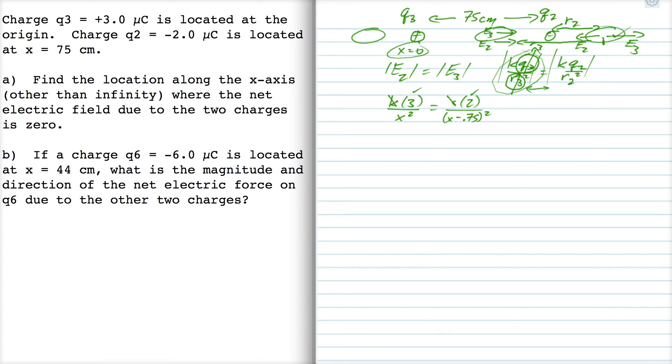Okay, so simplifying, the k's go away. And then if I swap these quantities here, I get 3 over 2 is equal to x squared over x minus .75 squared. Well, now I take the square root of both sides, and I'm left with the square root of 1.5 is equal to x over x minus .75.